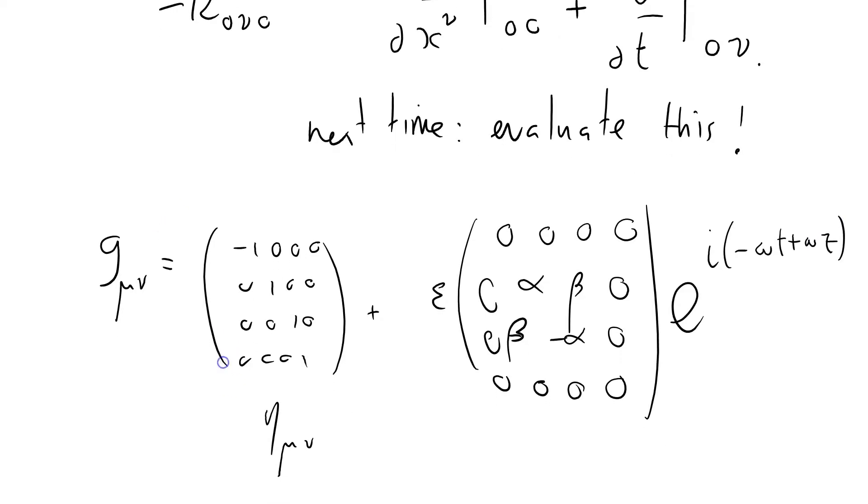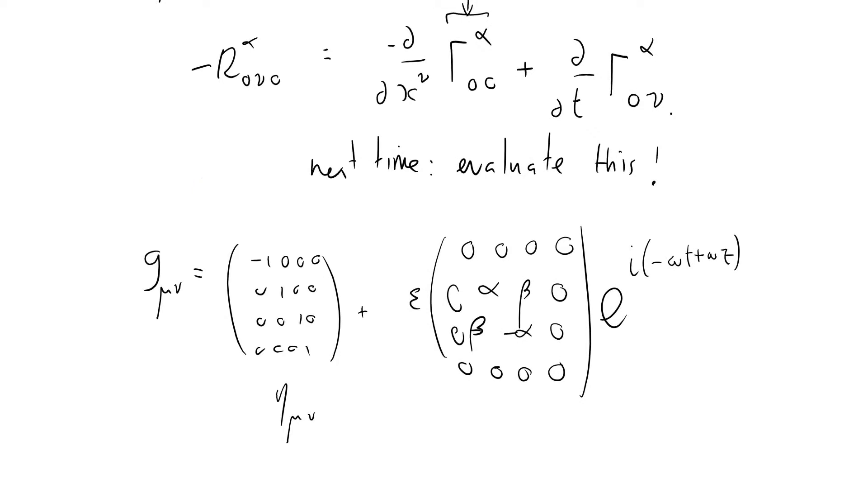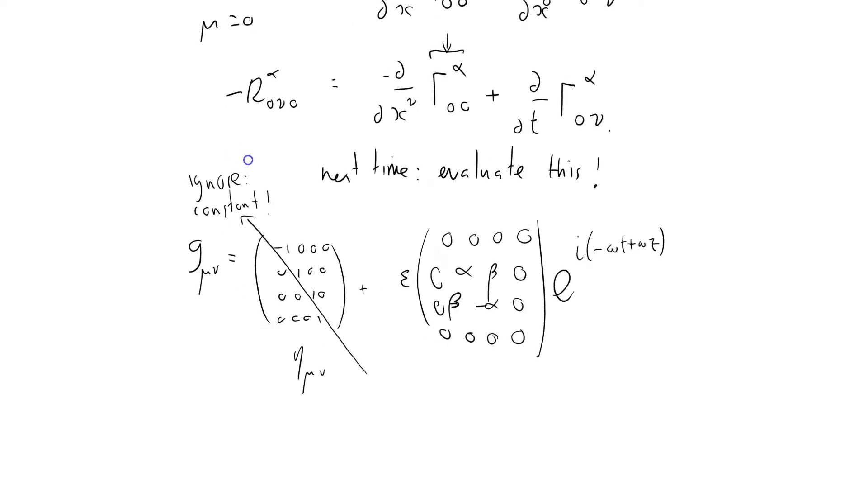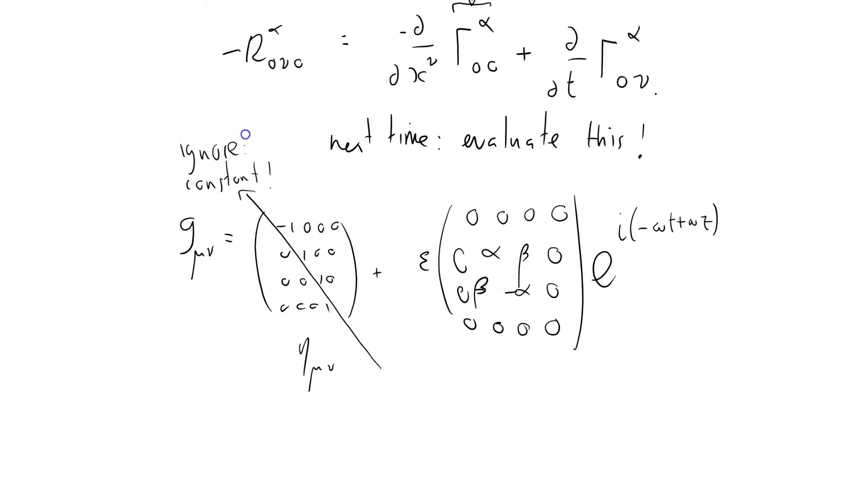So we're going to consider the Christoffel symbols, and you'll recall that the Christoffel symbols are just derivatives of the metric tensor. That means I can basically ignore this because it's a constant. That's nice, so we'll just consider that term there.